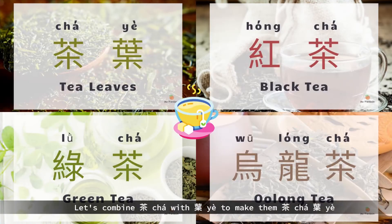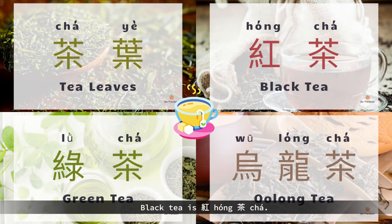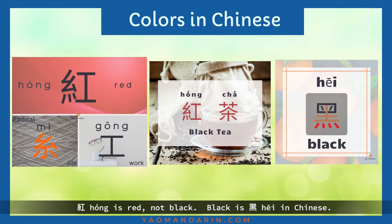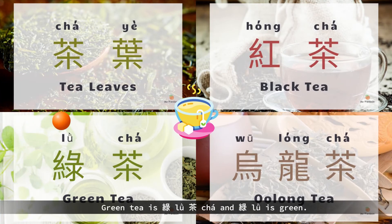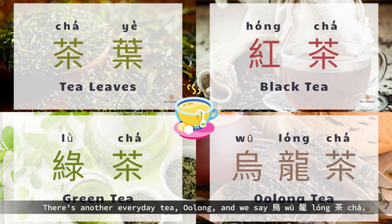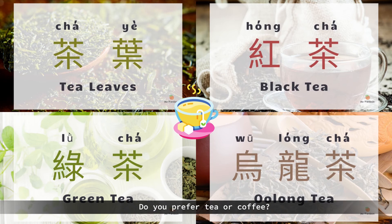Let's combine 茶 with 葉 to make 茶葉, which means tea leaves. Black tea is 紅茶 — 紅 means red, not black; black is 黑 in Chinese, so don't forget to use red when you want to say black tea. Green tea is 綠茶, and 綠 means green, so there's no problem memorizing it. There's another everyday tea — oolong tea — and we say 烏龍茶. I'm a tea person — how about you? Do you prefer tea or coffee? Welcome to share your preference with me.